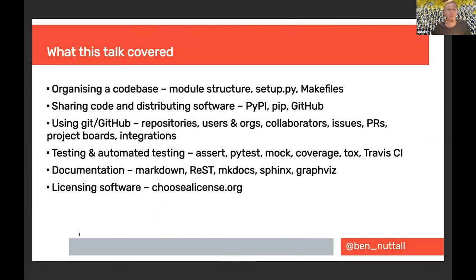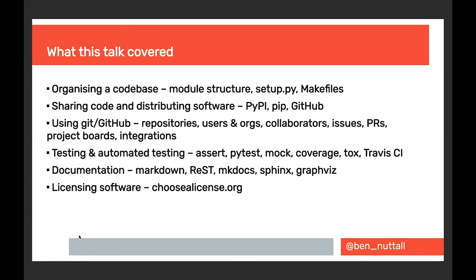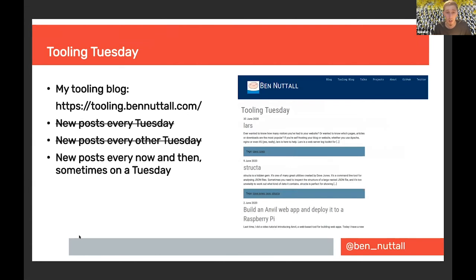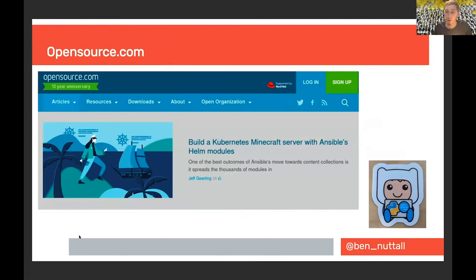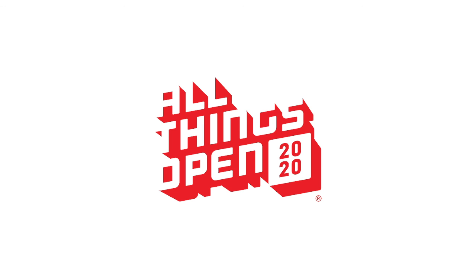Just wrapping up — to go over what the talk covered: organising your codebase with module structure, setup.py, and Makefiles; sharing code and distributing software via GitHub and PyPI so people can pip install; using Git and GitHub — repositories, users, organisations, collaborators, issues, pull requests, project boards; automated testing; documentation; and licensing software. I write about tools I come across on my blog at tooling.bennuttall.com, and I also write for opensource.com. Do check those out. That's all from me — thanks for listening.